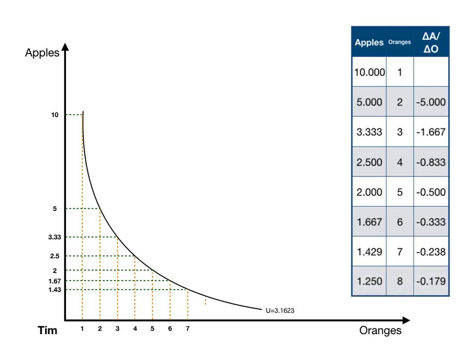This is our indifference curve for Tim consuming and deciding between apples and oranges. Now, what's Tim's maximum bundle of apples and oranges? That's going to depend on the prices of apples and oranges. One thing we do know is that when Tim has a lot of apples and very few oranges, Tim is willing to give up a lot of apples for an additional orange. You can imagine this if you had a bag of chocolate and somebody else had a soda — you would be willing to give up a lot of the chocolates to get the soda, relative to if you just had one or two pieces of chocolate and might not want to give that up.